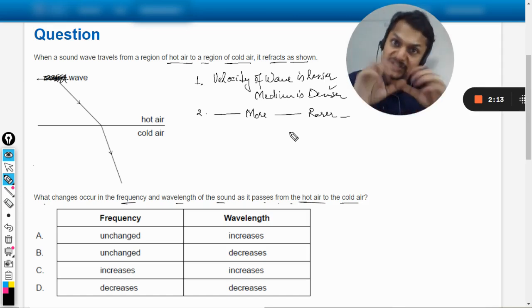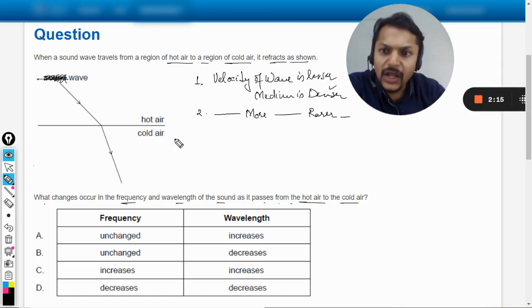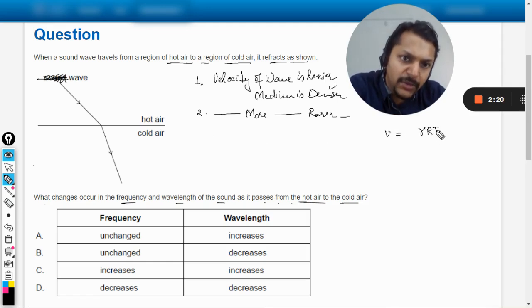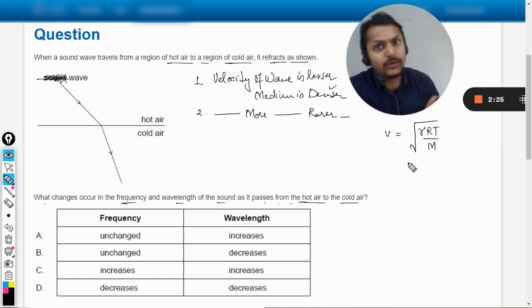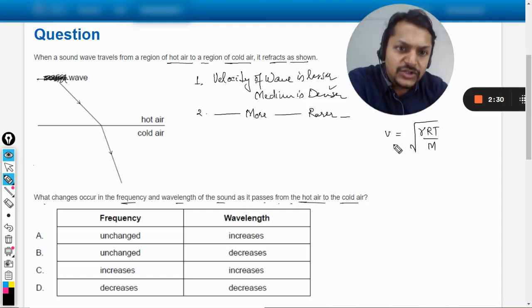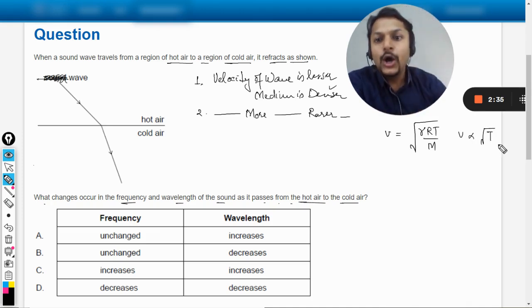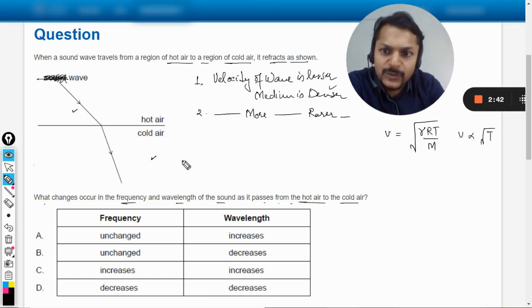Now in the case of sounds, we have to first see what is happening. So hot air - the speed of the sound, the formula is given by √(γRT/M). This is really a high level formula and this is not required in the IB, just for the sake of argument I'm doing this. So velocity is directly proportional to square root of temperature. It means hot air - more is the temperature, more is the speed. So the speed here is more and speed here is lesser.